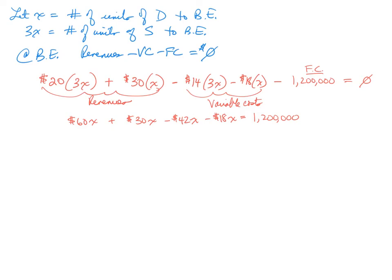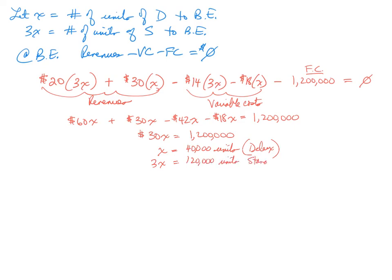Combining like terms gives us 30X = $1,200,000. Solving for X gives us X = 40,000 units. Since X represents the deluxe, 3X — the standard — must be 120,000 units, which is exactly what we found using the bundle method.